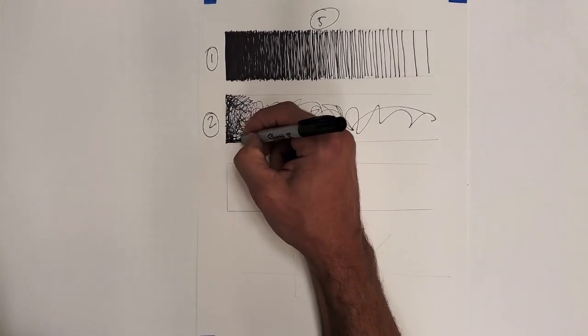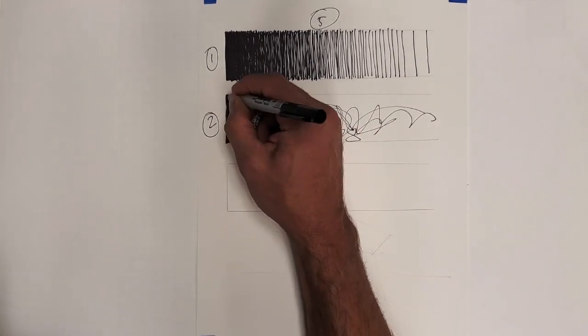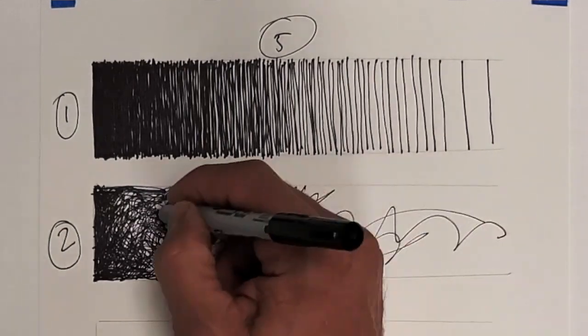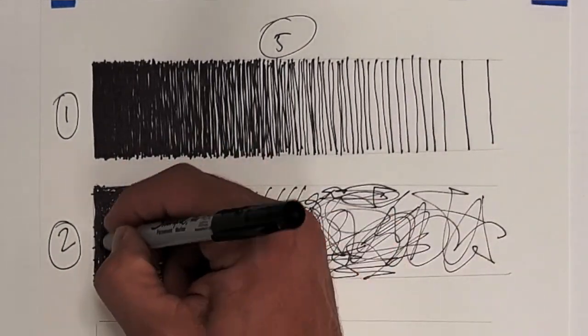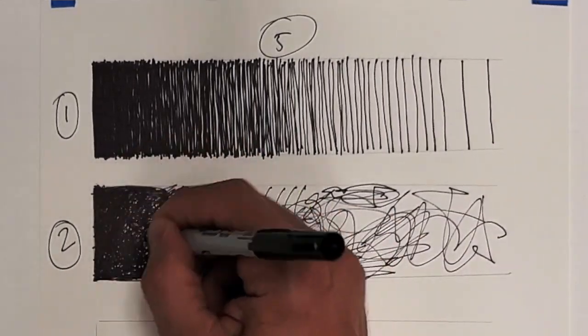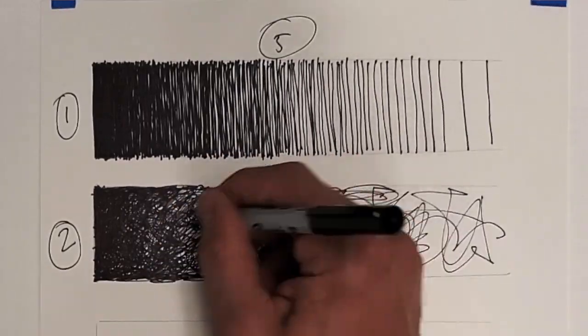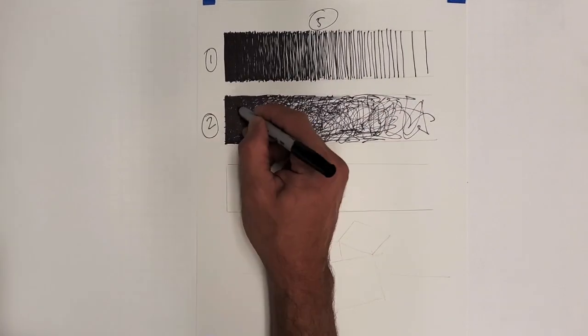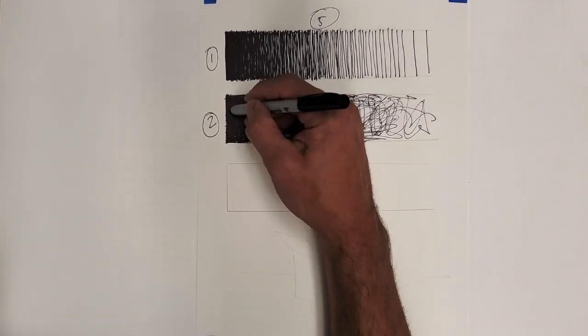So the first one you're going to do is going to have lines and the second one will be scribbles. And again, no hard outlines, scribble, and seeing if you can really control how you go edge to edge. Obviously that's very fast, but that's what it looks like.